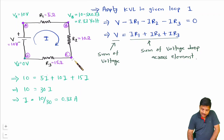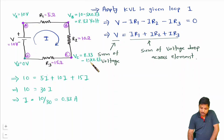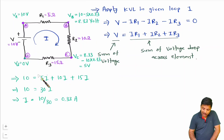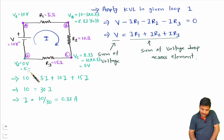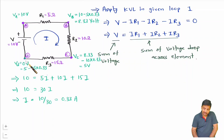To find the voltage at node C: VC equals VB minus the voltage drop across R2, so VC equals 8.33 minus 10 times 0.33, which is 8.33 minus 3.33, giving 5 V. To find the voltage at node D: VD equals VC minus the voltage drop across R3, so VD equals 5 minus 15 times 0.33, which is 5 minus 5, giving 0 V. This confirms how we can identify voltage at any terminal using KVL.